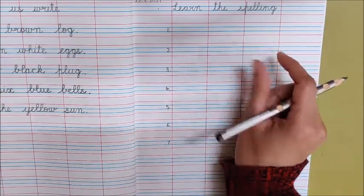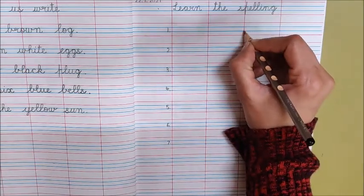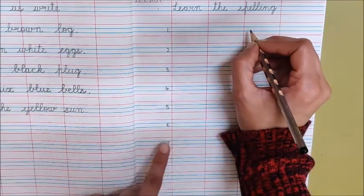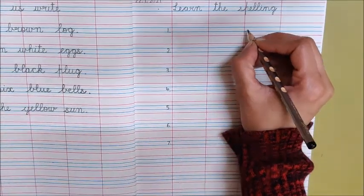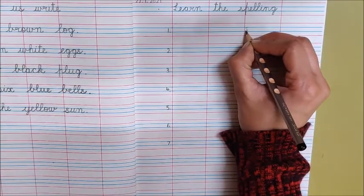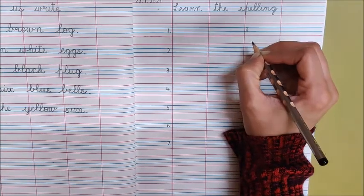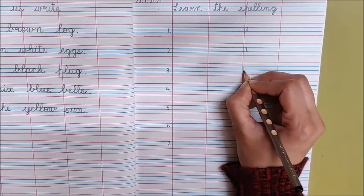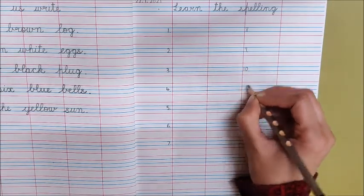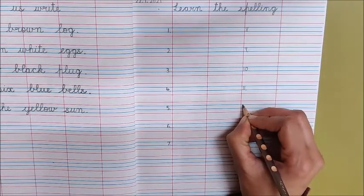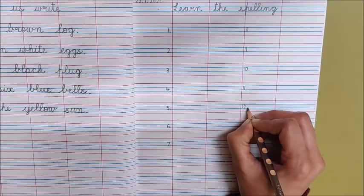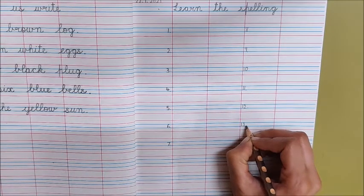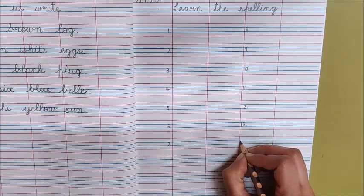In the third column, near this margin, write down number eight. What comes after seven? Eight. So write down here near this margin. Eight dot, nine dot, ten dot, eleven dot, twelve dot, thirteen dot, fourteen dot.